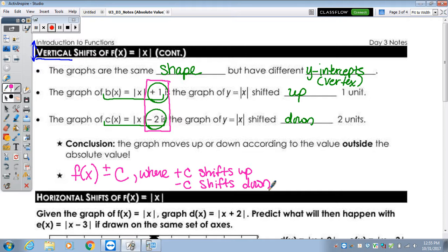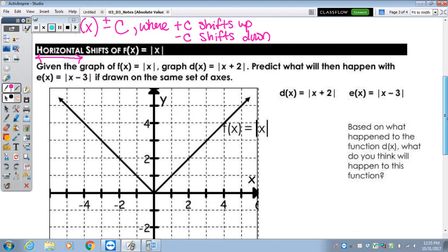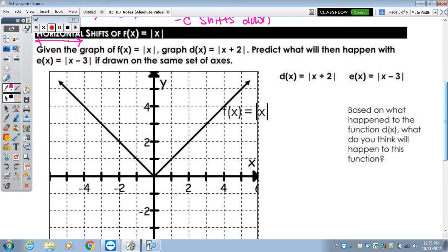Now we're going to finish up with a horizontal shift, which is a shift left to right, to that basic or parent function of f of x equals absolute value of x. Given the graph of f of x equals absolute value of x, graph d of x, which is the absolute value of x plus 2. Predict what will then happen with e of x, which is the absolute value of x minus 3, if drawn on the same set of axes. You notice that both of these were either subtracting or adding within the absolute value symbols, not outside. Let's draw our table, as one is not provided.